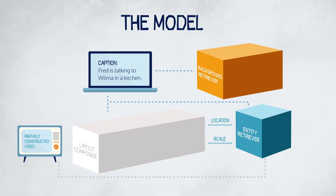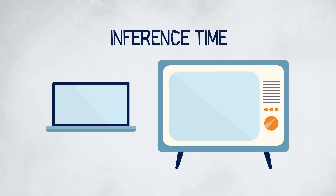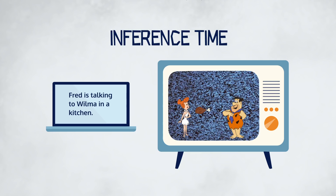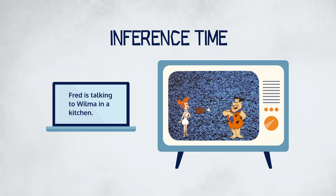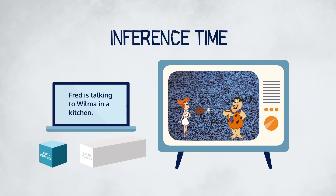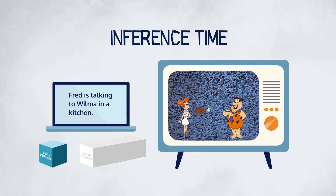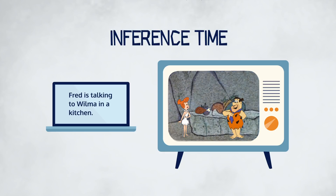The task of the background retriever is to find a background scene that matches the setting described in the description. At inference time, CRAFT begins with an empty video and adds entities in the scene sequentially based on the order of appearance in the description. Alternating between the layout composer and the entity retriever allows the model to condition the layout of entities on the appearance and vice versa. Finally, the retrieved spatiotemporal entity segments and background are fused to generate the final video.